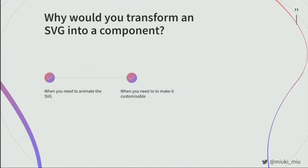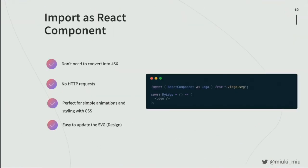Why would you want to expose the SVG code? I found two use cases: one is if you want to animate the SVG, and the other is if you want to make it customizable. To import as a React component, you can use Create React App out of the box, or a dependency like SVGR. You just say import ReactComponent as the name you want. You don't need to convert to JSX, there are no HTTP requests, and it's perfect for small things like CSS animations. It's also really easy to update the design — you just replace the file and it's done.